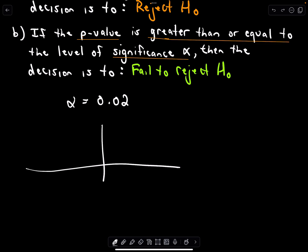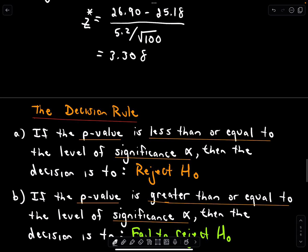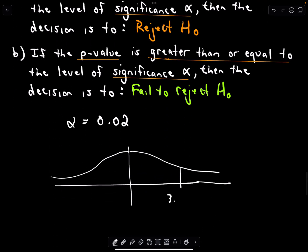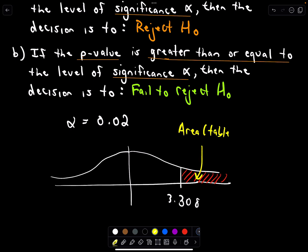All we have to do is we look at that value of our test statistic, 3.308. All I'm doing is I'm using a table and I'm looking at the area underneath this tail. It turns out that this area, from a table, that's going to be the p-value.